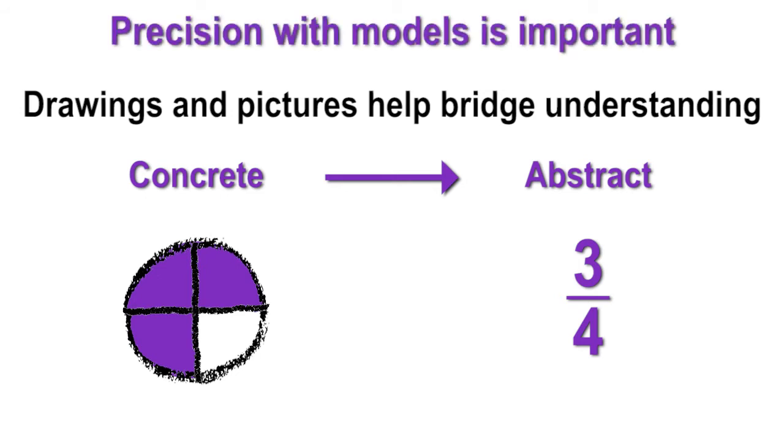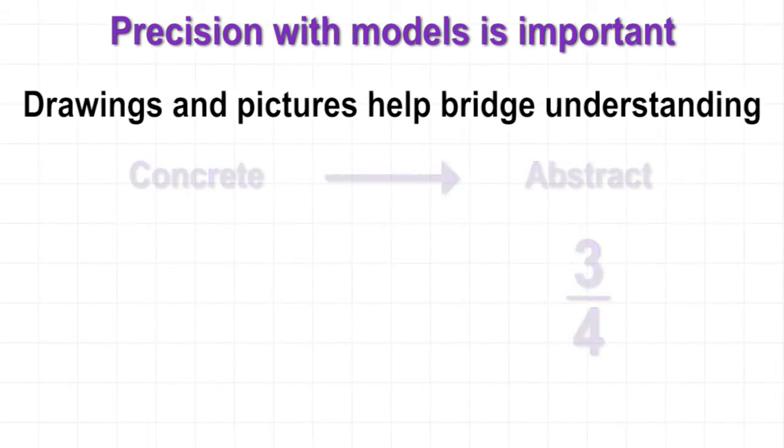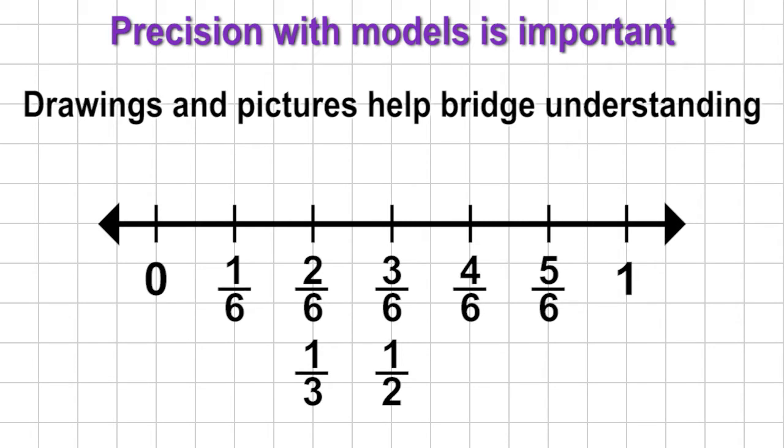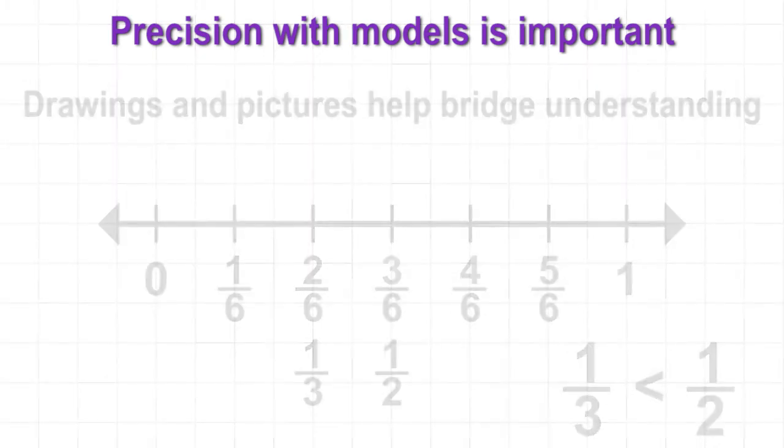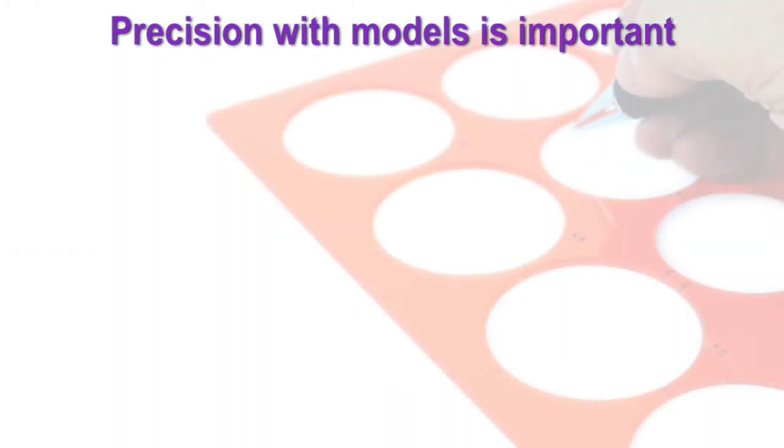However, students must be careful to be as precise as possible in order to compare fractions or identify equivalents. Grid paper is also a great tool to create equivalent drawings as seen here to compare one-half and one-third on a number line. For fraction circle models, students will be encouraged to use stencils or trace around something round to ensure models are the same size whole.